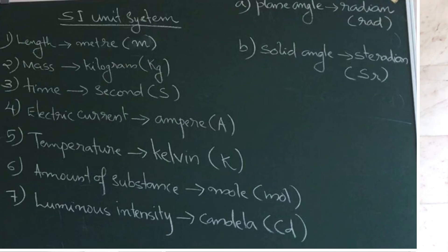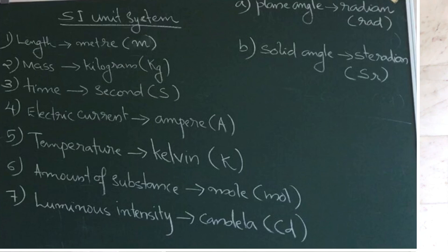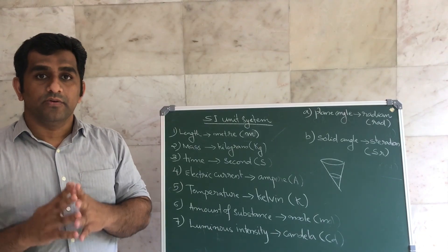In the SI unit system there are seven fundamental units: length — meter (m), mass — kilogram (kg), time — second (s), electric current — ampere (A), temperature — Kelvin (K), amount of substance — mole (mol), luminous intensity — candela (cd). The two supplementary units are: plane angle — radian (rad), and solid angle — steradian (sr). You should note all of these for the SI unit system.